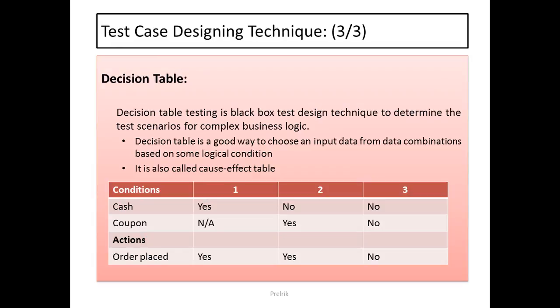The third technique is the Decision Table, which is a bit more complex and is used to handle complex scenarios only. Decision table testing is a black box test designing technique to determine test scenarios for complex business logic. It is a good way to choose input data from data combinations based on logical conditions.